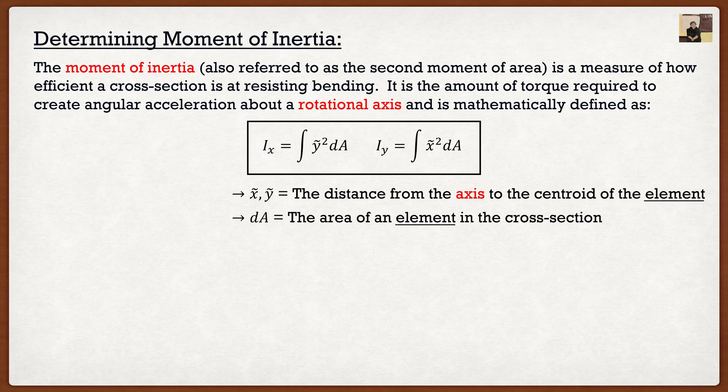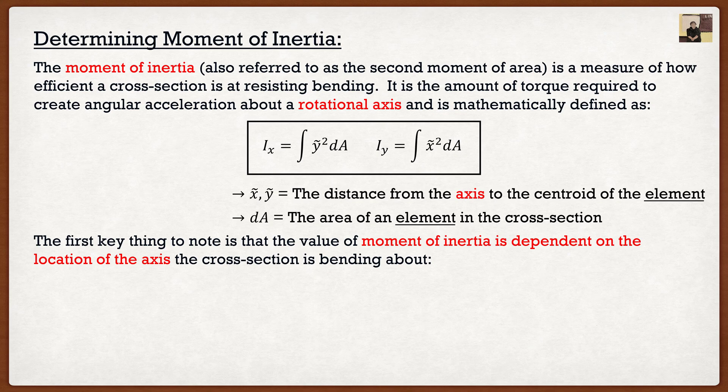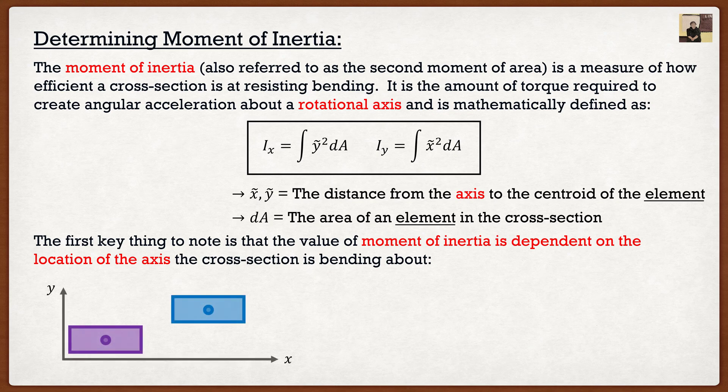So this is going to lead to the first key thing I want you all to remember about moment of inertia. If we look at y squiggle and x squiggle, it's the distance from the axis to the centroid of the element. So depending on where our axis is, the moments of inertia is actually going to change. So again, the moment of inertia is dependent on the location of our bending axis or rotation axis.